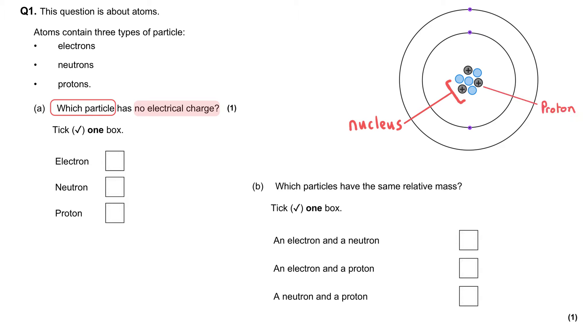That is where we find the positive protons and the neutral neutrons, and the electrons orbit the nucleus in rings which are known as shells or energy levels. And as I was describing it there, I listed the fact that protons were positively charged, and we might write plus one.